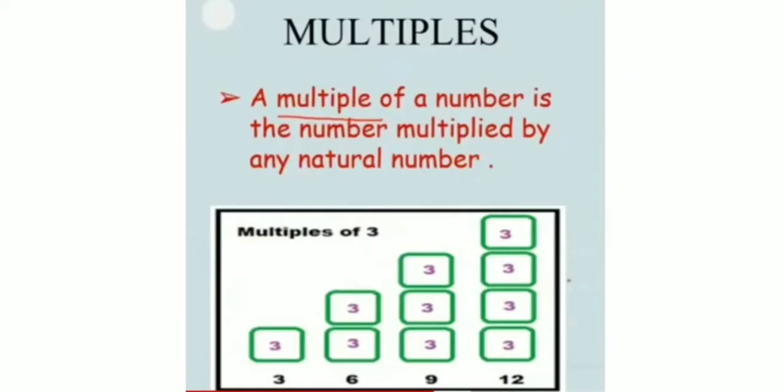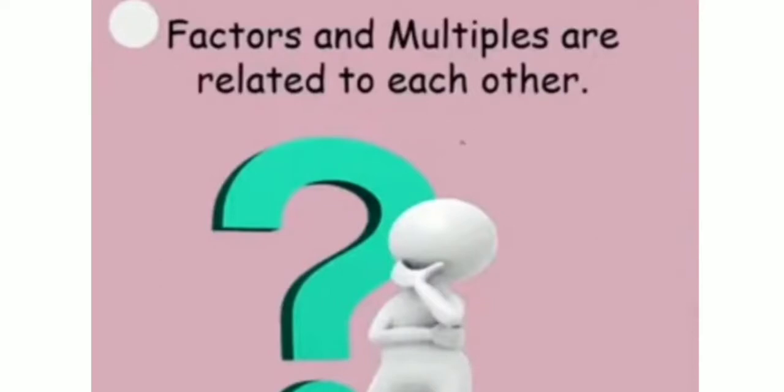Next is multiples. A multiple of a number is the number multiplied by any natural number. The multiples of 3 are 6, 9 and 12. Now factors and multiples are related to each other. For example, 5 into 4 is equal to 20, so factors of 20 are 5 and 4, and multiple of 5 is 20. Same way, multiple of 4 is 20.